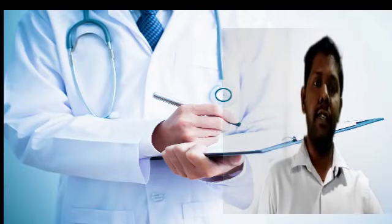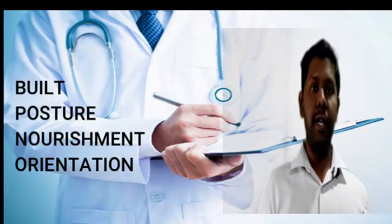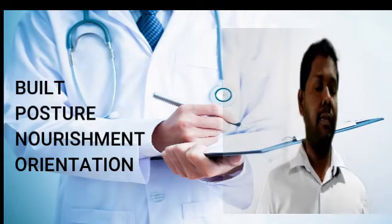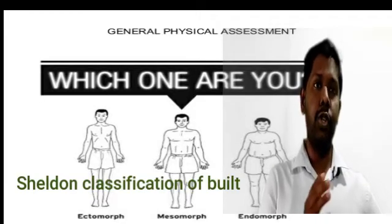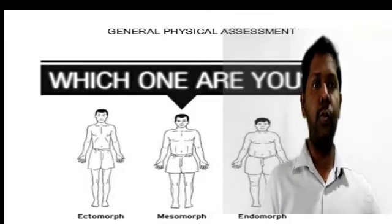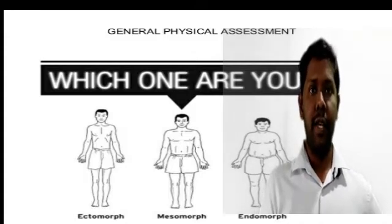Coming to the next part of our case history — general examination. Usually some points are commonly used in almost all departments: build, posture, nourishment, and orientation. Coming to build, according to Sheldon's classification there are three types: ectomorphic, endomorphic, and mesomorphic. Ectomorphic persons are thin and tall, endomorphic are short and obese, and mesomorphic are muscular.